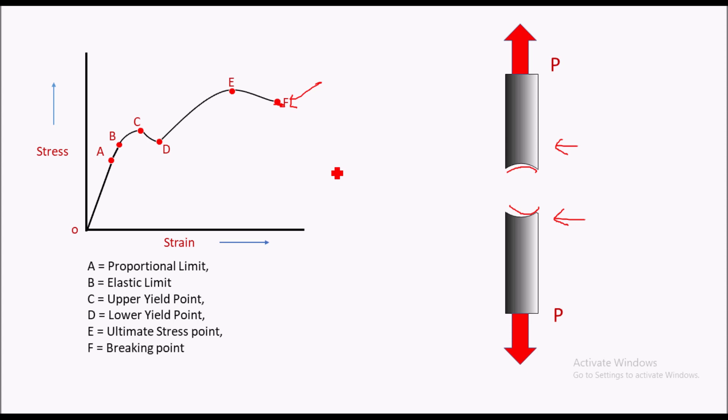So this is all about the stress-strain curve. Here you can see the area in region OA is called the elastic region, while the area in region B to region F is called the plastic region. This is your plastic region on the stress-strain curve and this is your elastic region on the stress-strain curve.